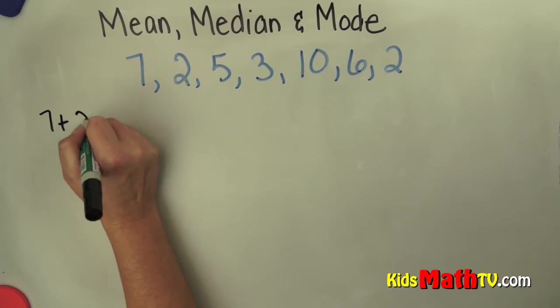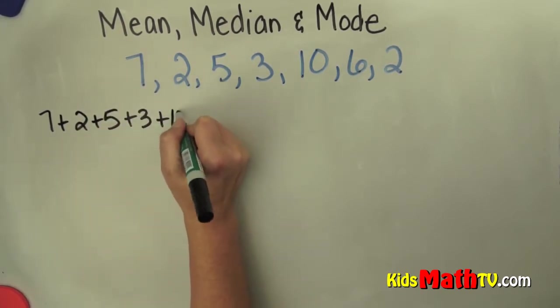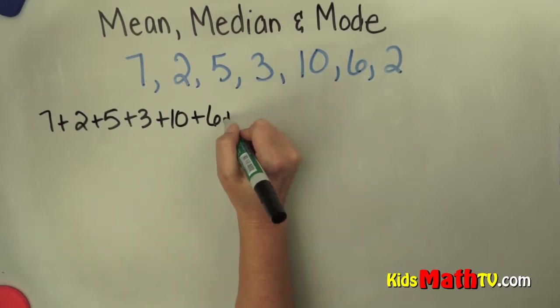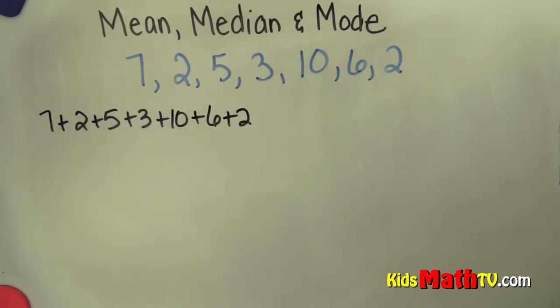So 7 plus 2 plus 5 plus 3 plus 10 plus 6 plus 2. That's 1, 2, 3, 4, 5, 6, 7 numbers there.